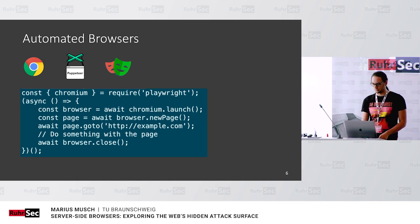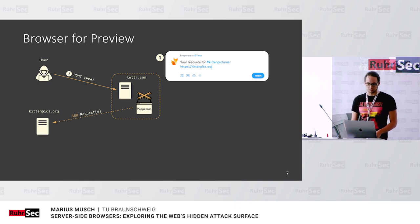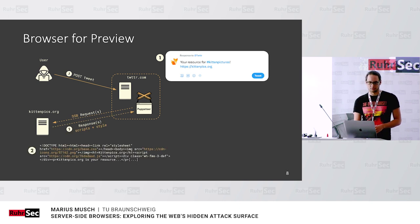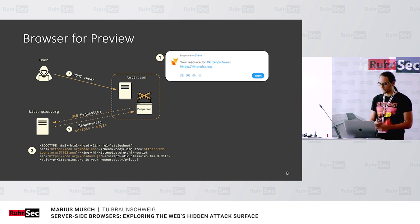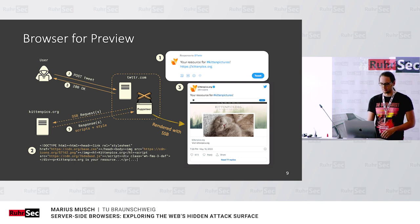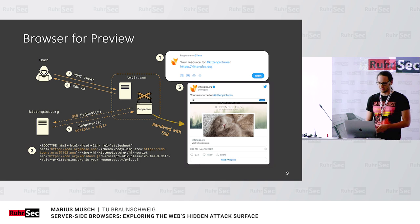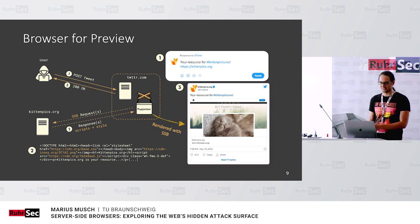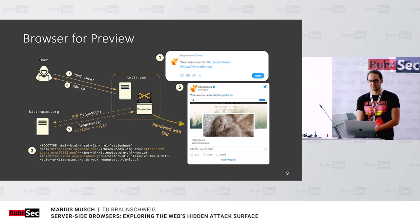Let's go back to our scenario. We now use a browser for our preview — we replaced curl with Puppeteer, for example. This talk isn't specific to Puppeteer; I only use it as an example because it's the most popular and well-known. Now we make a server-side browser request — SSB for short. Kittenpix responds with the HTML, but now other things also happen because we're using a real browser: the stylesheet is requested and executed, an image is loaded, and JavaScript is executed. This has advantages — the preview is much nicer, and we now have an actual picture of a kitten.